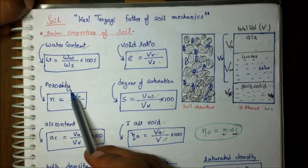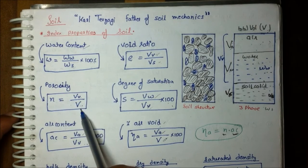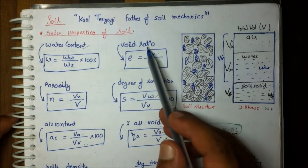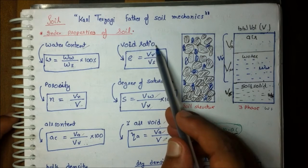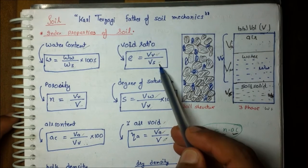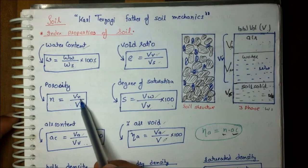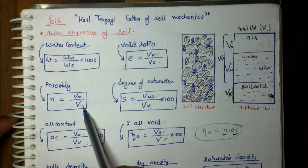Next is porosity. Porosity is the volume of void upon total volume. It is related to void ratio — where void ratio is volume of void upon volume of solid, porosity is volume of void upon total volume.